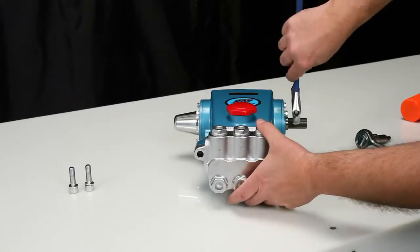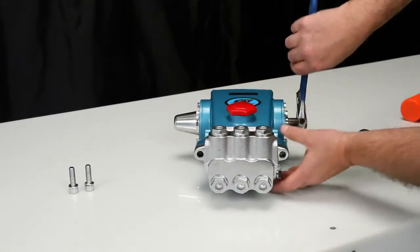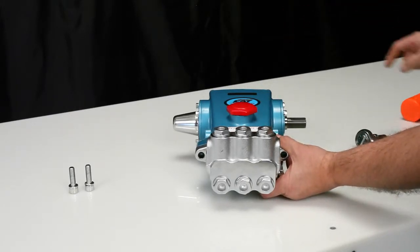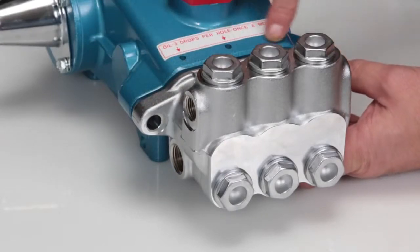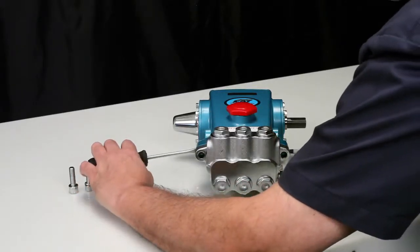To create separation between the manifold and crankcase, rotate the crankshaft until there is a gap between the manifold and crankcase. Once separation has been made, use two flat tip screwdrivers to pry the manifold away from the crankcase.